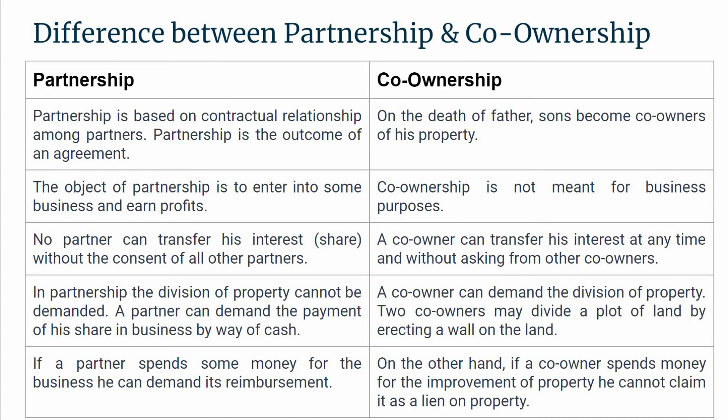On the other hand, if a co-owner spends some money for the improvement, maintenance, or upkeep of the property, flat, or apartment, he cannot claim it as a lien on the property.